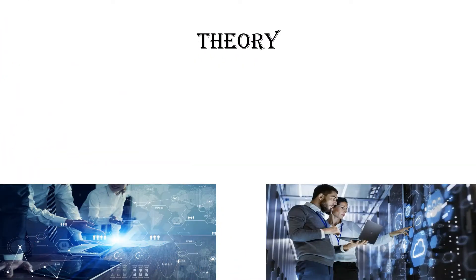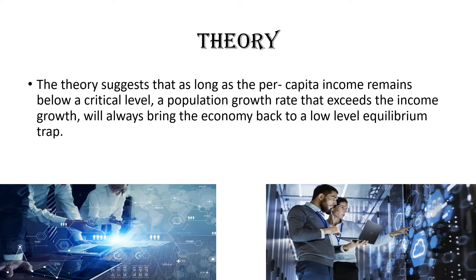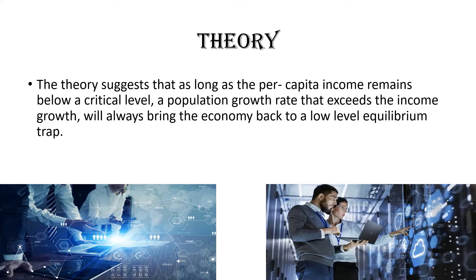The theory suggests that as long as the per capita income remains below a critical level, a population growth rate that exceeds the income growth rate will always bring the economy back to a low level equilibrium trap. To avoid this trap, it is necessary to introduce technical progress so that the production function — which accounts for the output or real income growth rate — lies above the population growth rate. As long as that happens, the trap will cease to operate.